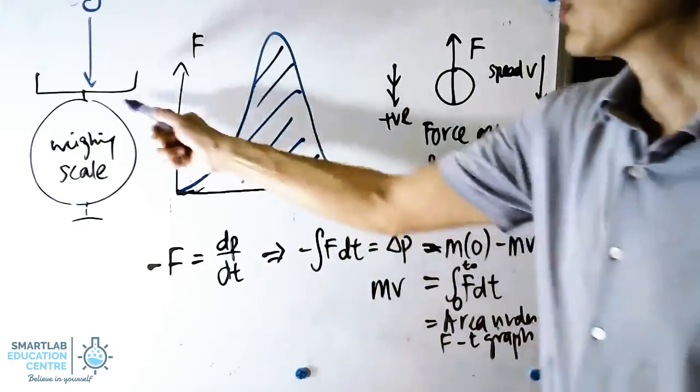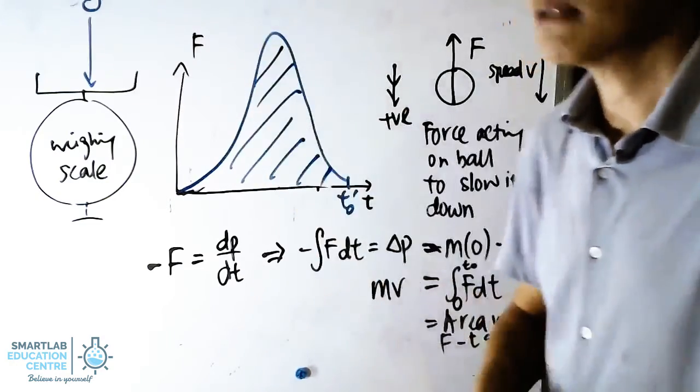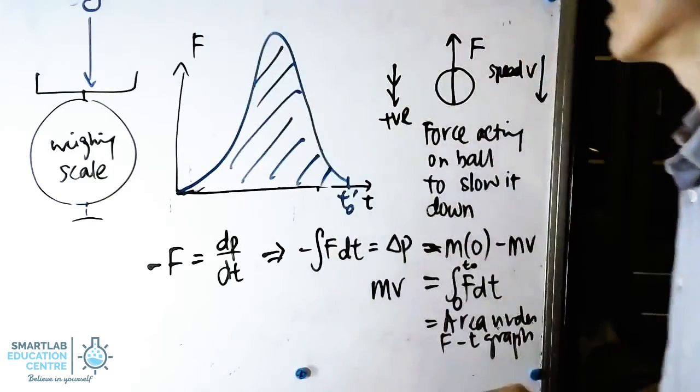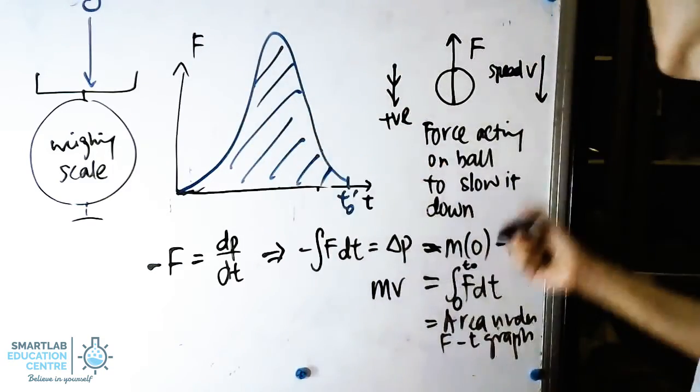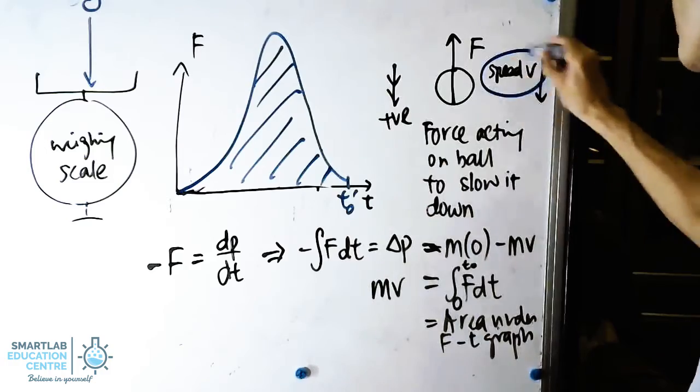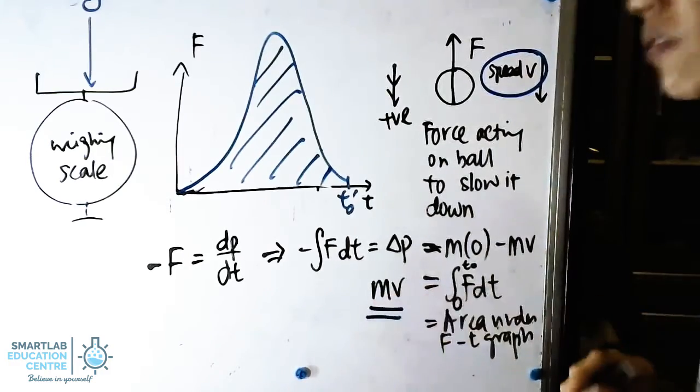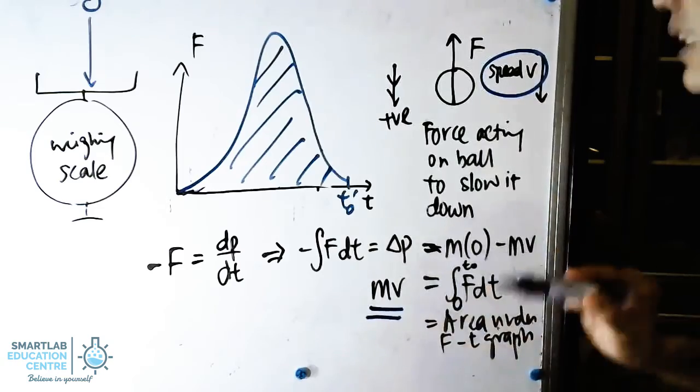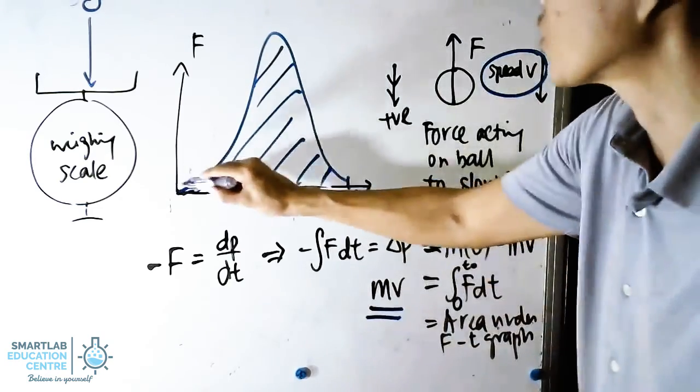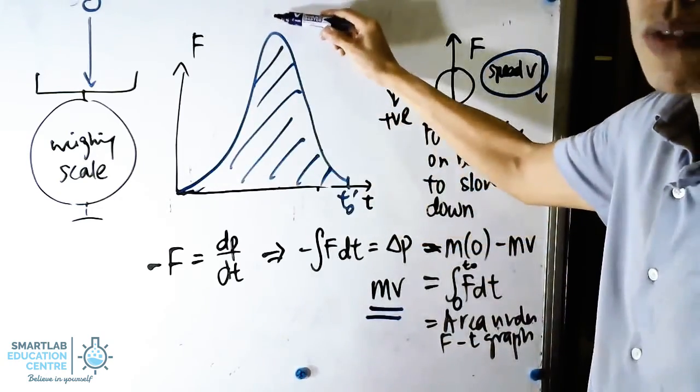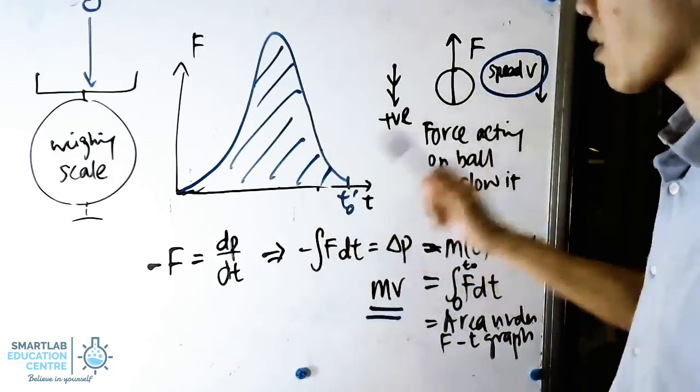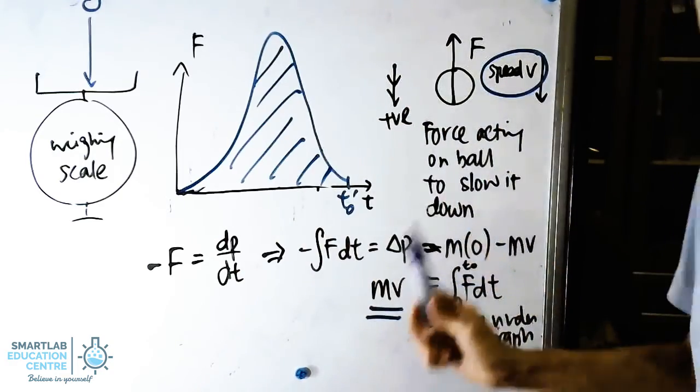So let's take a look what happens if you were to raise the ball and make the ball higher. We know that just before it hits the weighing scale, this mv will be of a larger value. And because mv is of a larger value, then the area under the ft graph must be higher. So which means that we expect actually a significantly higher force and actually a longer time to bring the momentum of the ball to zero.